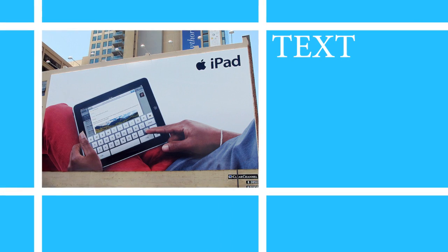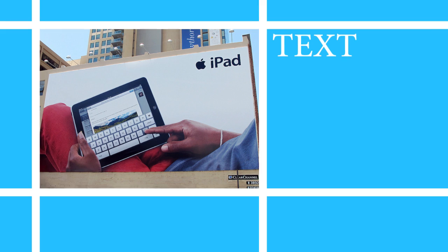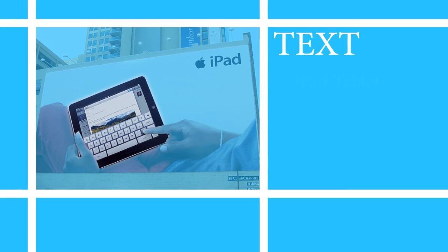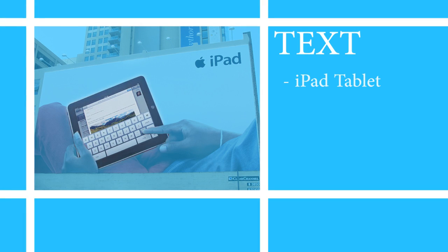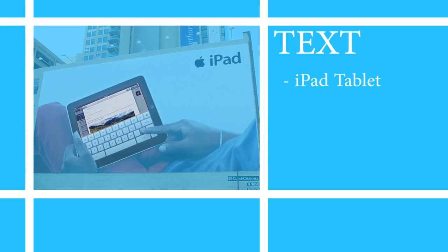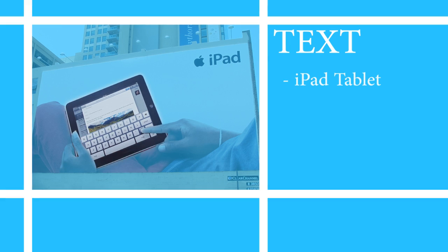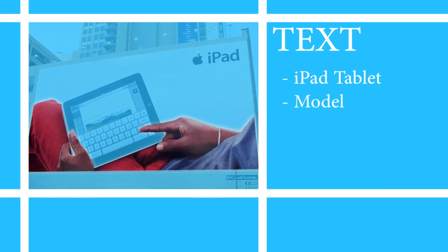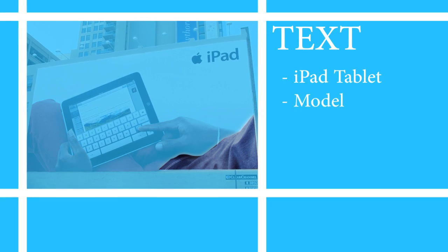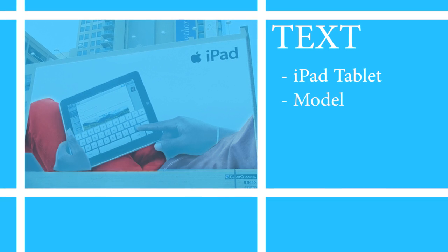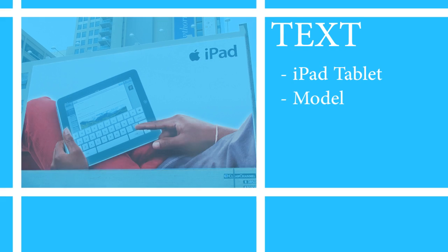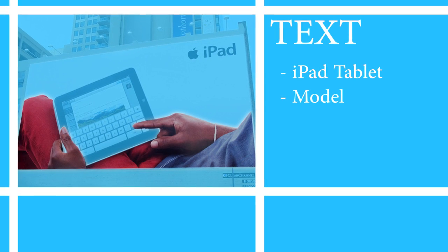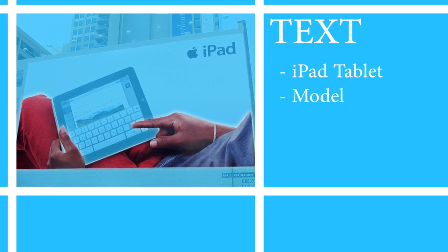First we analyze the text — that is, the photographic content in the ad. We see the iPad tablet itself, which is being used to create an email by using its on-screen keyboard. Then there is the model who is using the iPad, who wears a blue shirt, red pants, and a white bracelet. The model is reclining in the ad, giving a casual look and feel overall.